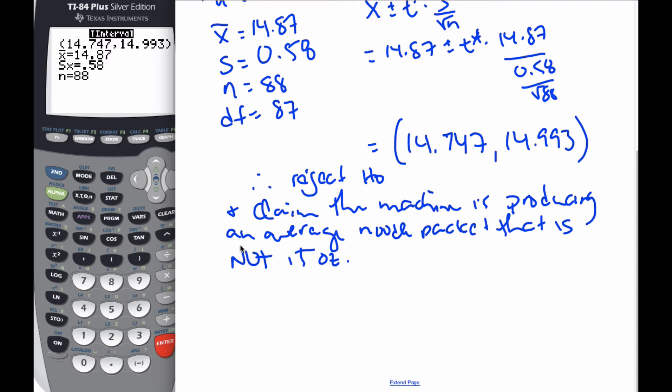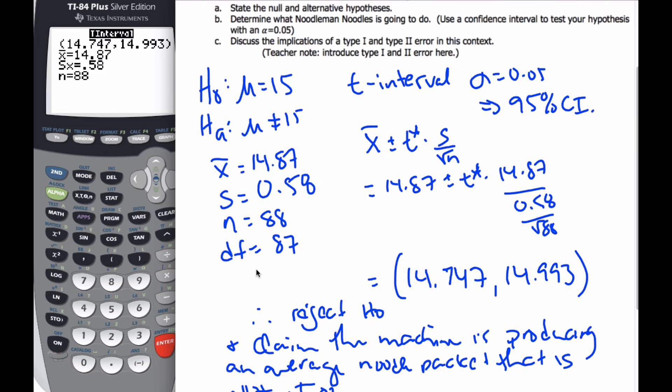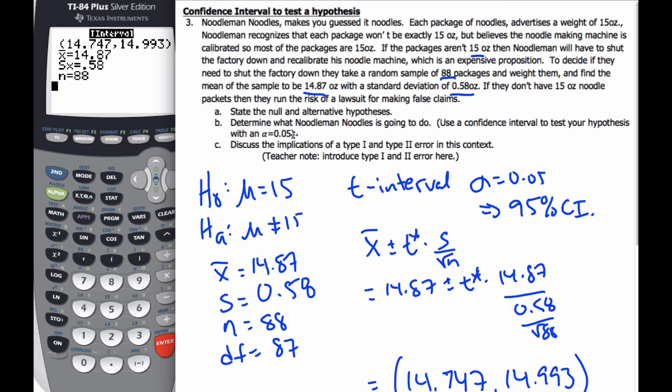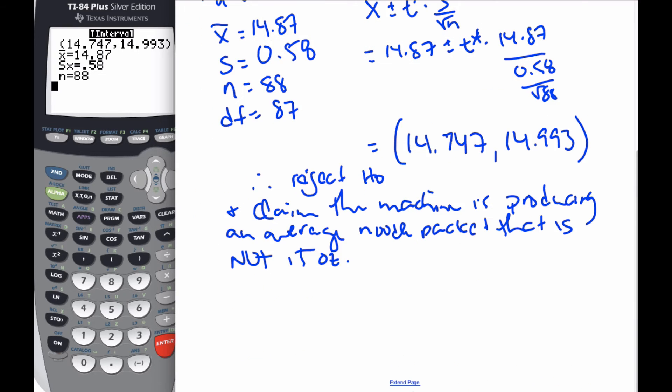That is my conclusion in context. Now, in reality, we have no idea if the machine is working correctly or not. We just have statistics to help us. We're going to discuss the implications of these scenarios, what's called a type 1 and type 2 error in this context.